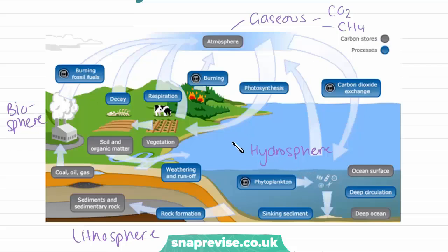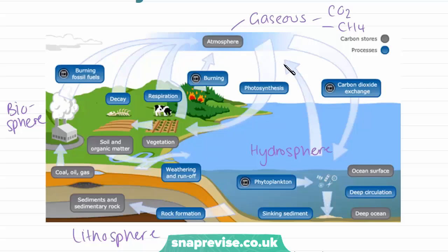To summarise, we have stores of carbon in four places on Earth: the hydrosphere, the lithosphere, the biosphere, and the atmosphere. The carbon cycle is the movement of carbon between these four major stores.